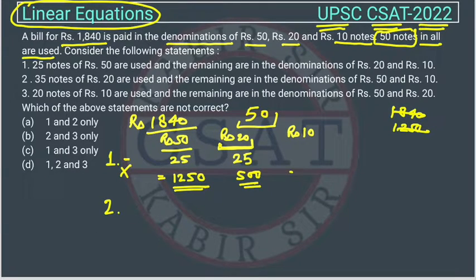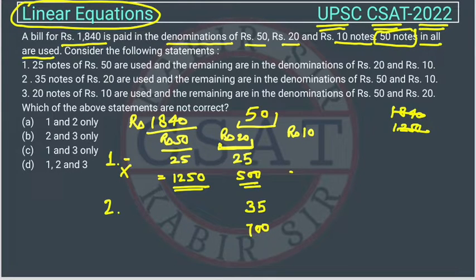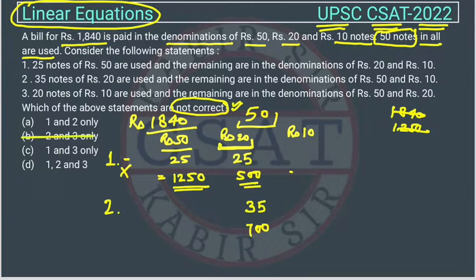Now checking the second statement: 35 notes of rupee 20 are used, giving 35 into 20 equals 700 rupees. An important note — many students see that case one is not possible, cut options with statement one, and say the answer is B. This is wrong, because the question asks which statements are NOT correct, so we must check all three.